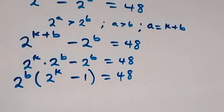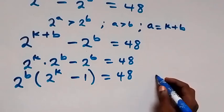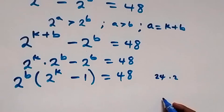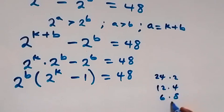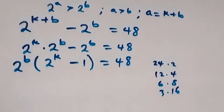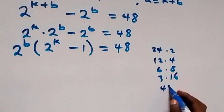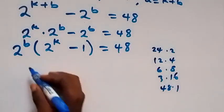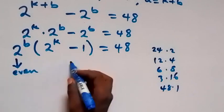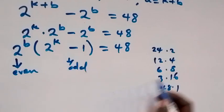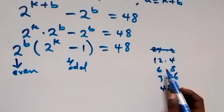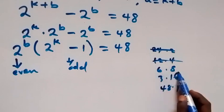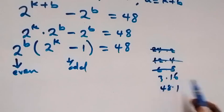We can separate 48 into factor pairs: 2 times 24, 12 times 4, 6 times 8, 3 times 16, and 48 times 1. Now, 2 raised to power b will be an even number, and (2 raised to power k minus 1) will be an odd number. Checking the pairs: 24 and 2 are both even — cancelled. 12 and 4 are both even — cancelled. 6 and 8 are both even — cancelled. 3 is odd and 16 is even — yes, this works.